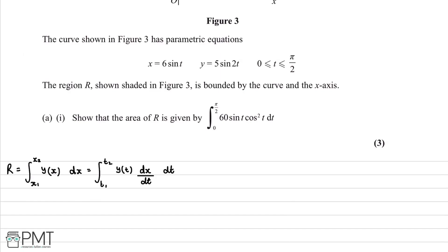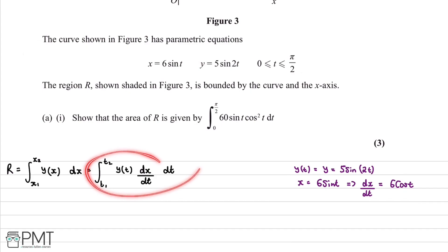We identify that y(t) = 5 sin(2t) and x = 6 sin(t). Differentiating x with respect to t, we get dx/dt = 6 cos(t). We can now substitute these expressions into our parametric area integral.